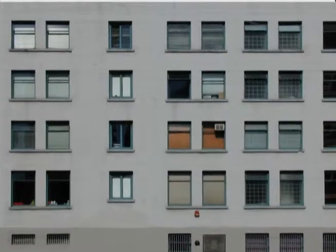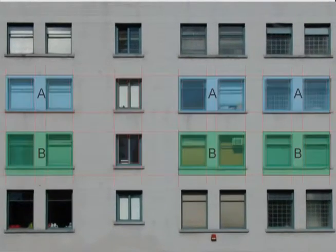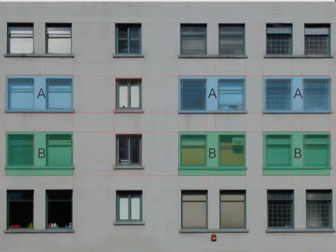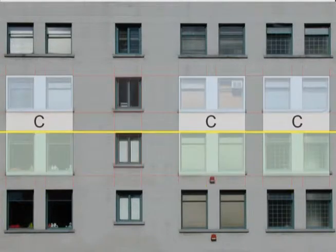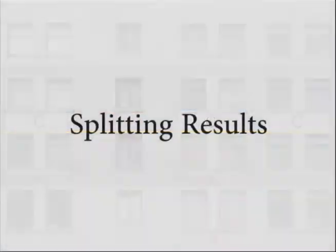One heuristic that helps selecting good splitting lines evaluates how many repeated regions are split and how large these repeated regions are. Please refer to our paper for more details of this algorithm.